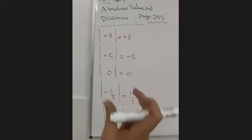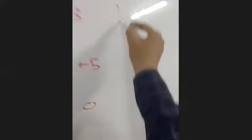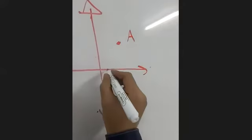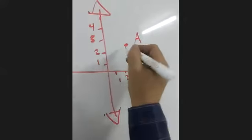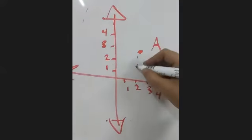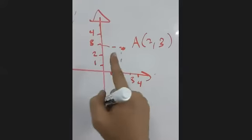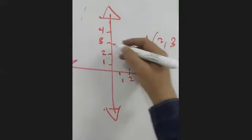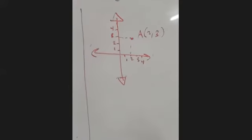That's how we deal with absolute value. Now let's talk about the new topic: distance. Let's remember the coordinate plane — we have the x-axis and the y-axis. To find a point, for example at x equals two and y equals three, we read x first, then y, giving us the ordered pair (2, 3), not (3, 2).